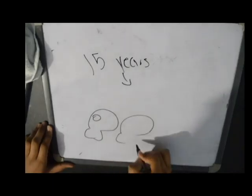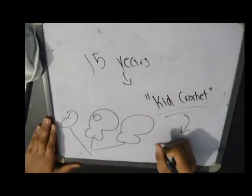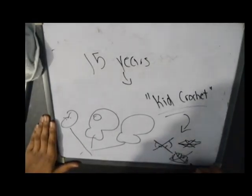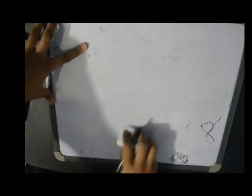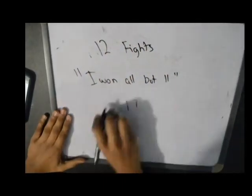At 15 years old, he was a boxer. He named himself Kid Crochet. His prize fighting earned him a broken nose, many broken knuckles, a scarred lip, and a very bruised body. He had 12 fights in his career, but he used to say, I won all but 11.